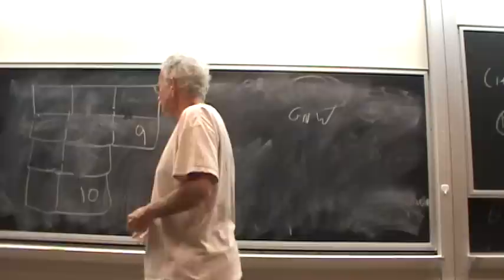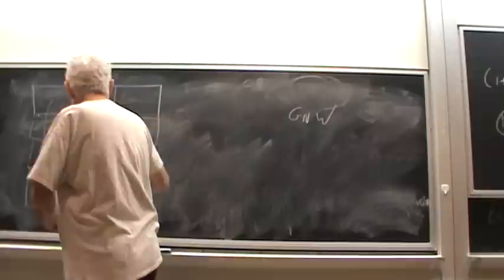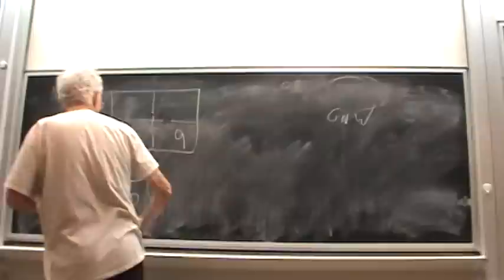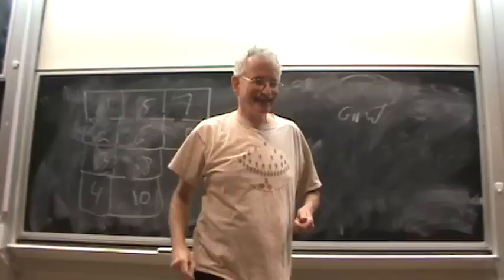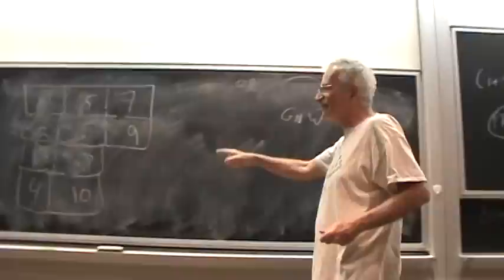The computer can do it so fast. Seven, and then six, five. And that's how you get very, very fast a random Young tableau uniformly at random.